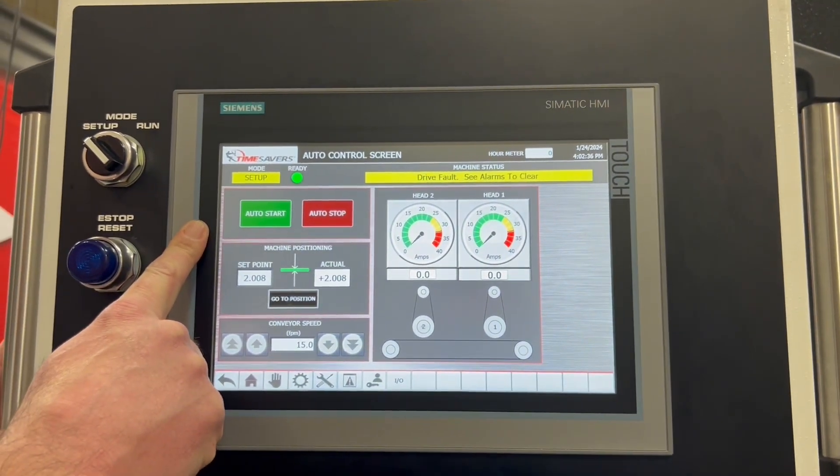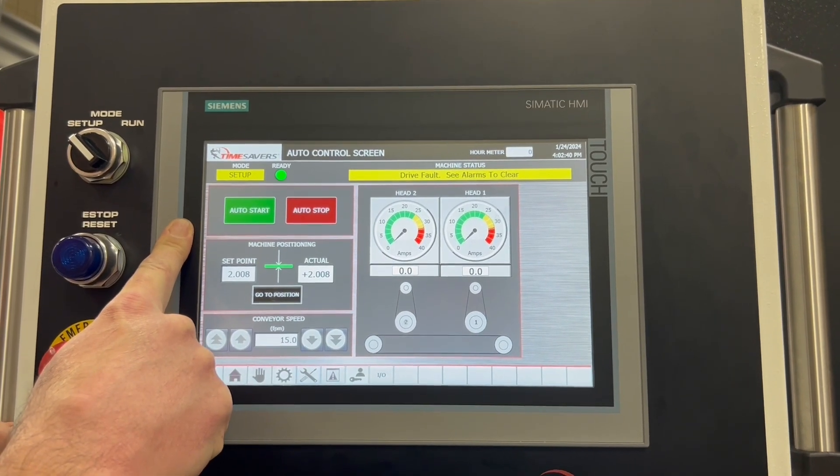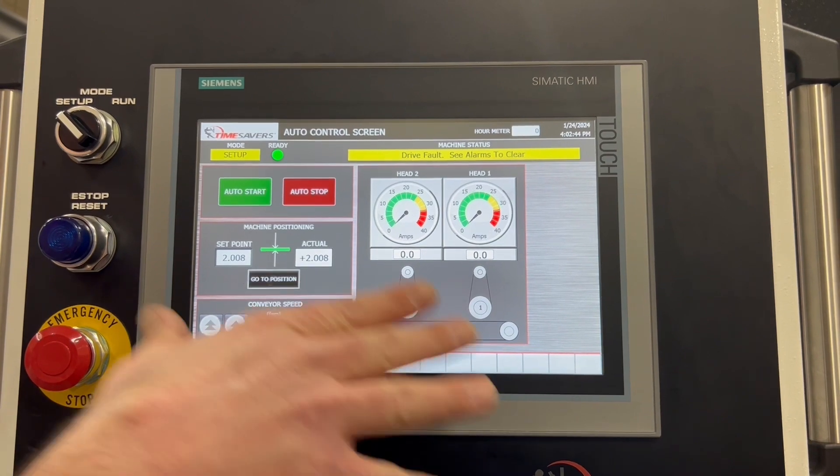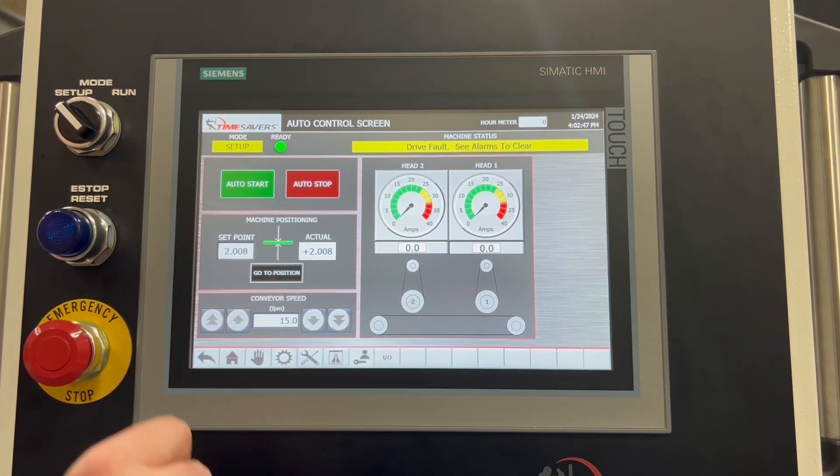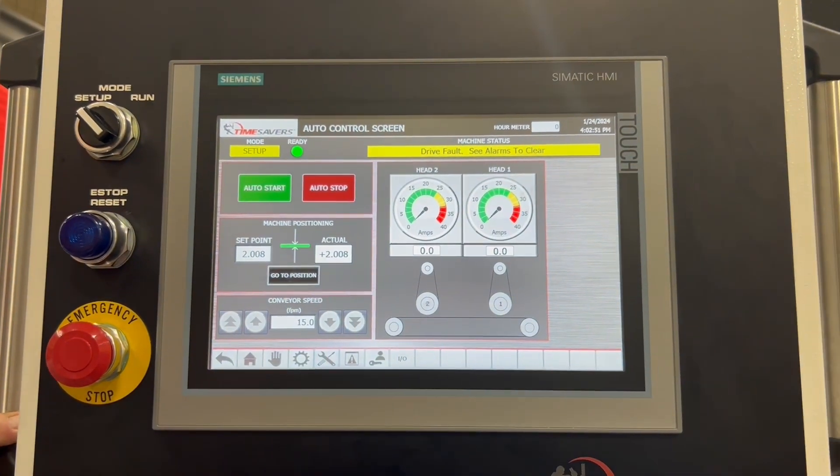We do have recipe storage so we can go ahead and pre-program up to probably more than a thousand different programs or part numbers. Once we have the part number or recipe identified here and pulled up into the system, we can go ahead and hit auto start and the machine will automatically start up depending on the recipe that is programmed in there.